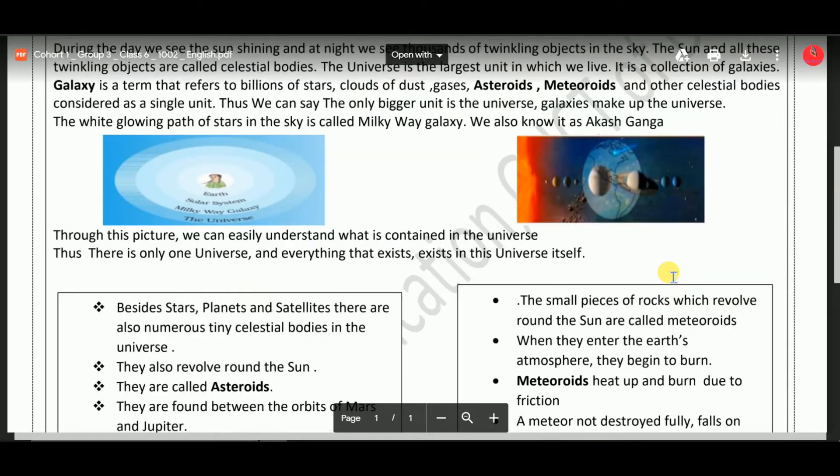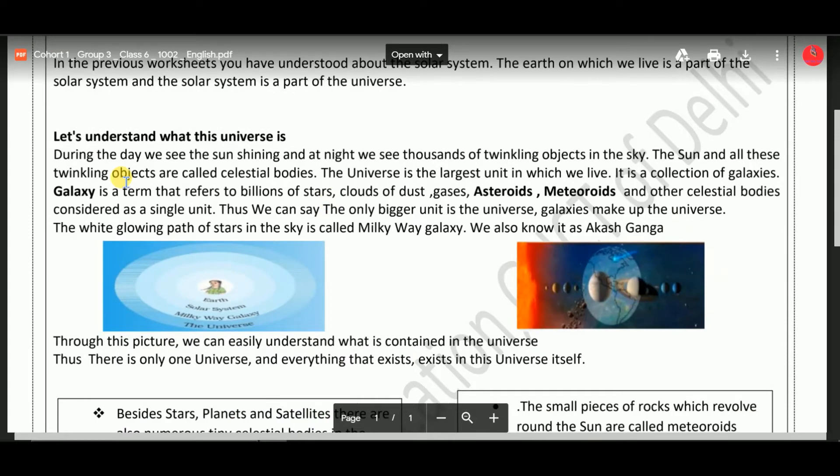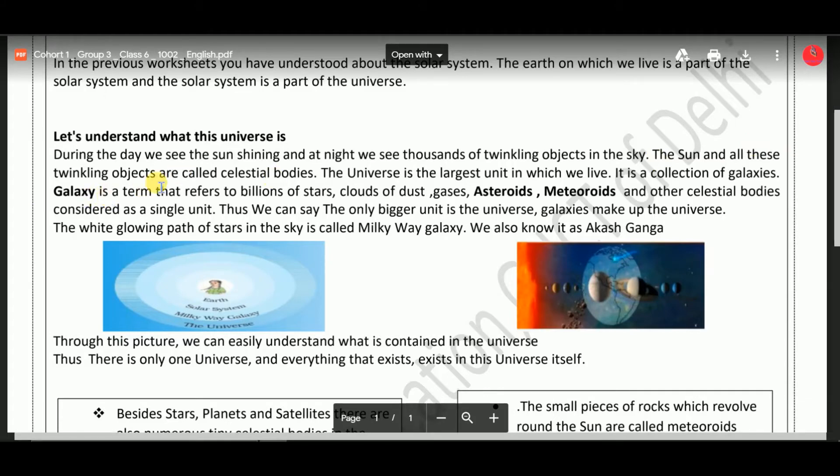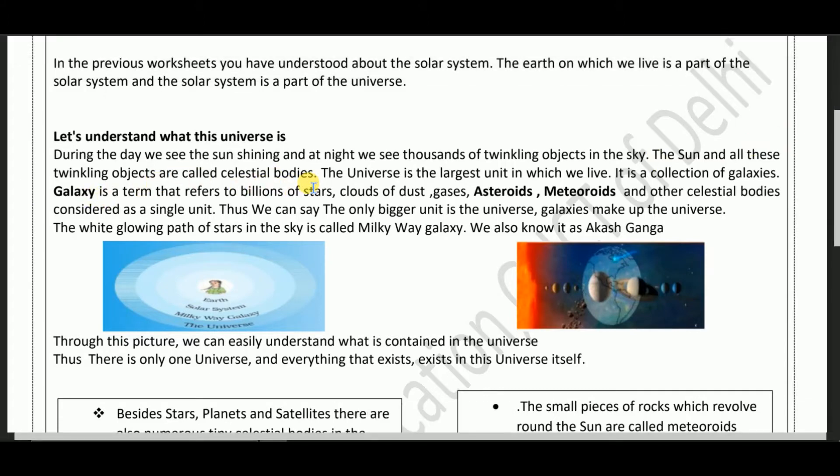During the day we see the sun shining and at night we see thousands of twinkling objects in the sky. The sun and all these twinkling objects are called celestial bodies. The universe is the largest unit in which we live. It is the collection of galaxies.